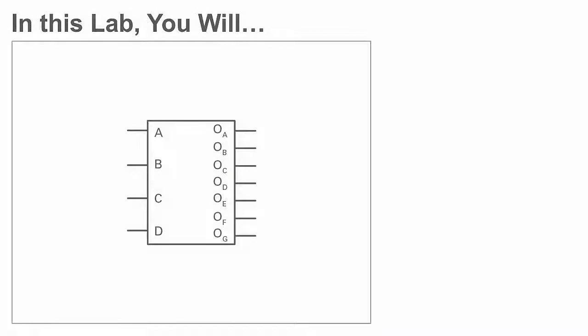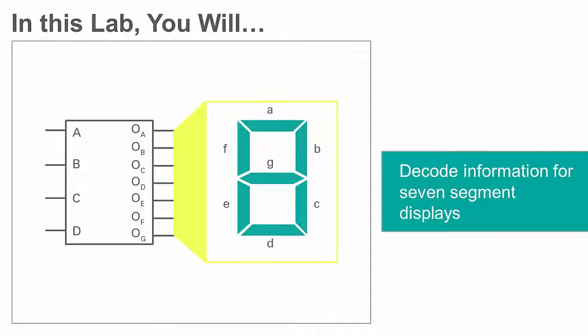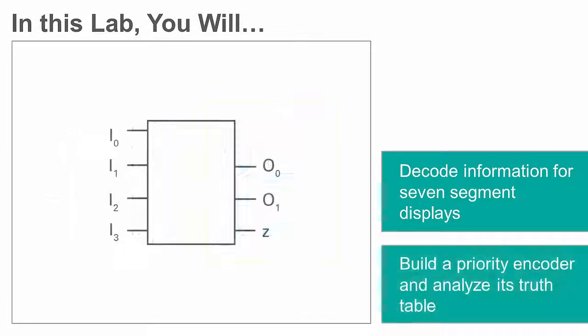In this lab, you will learn to decode information to 7-segment displays. You will also be building a priority encoder and analyzing the corresponding truth table.